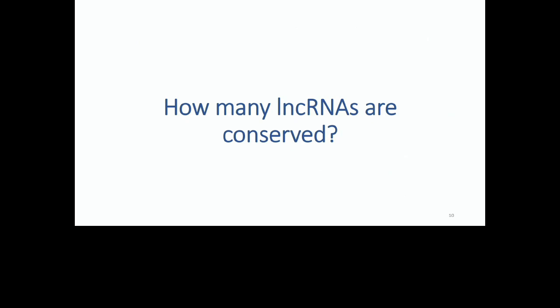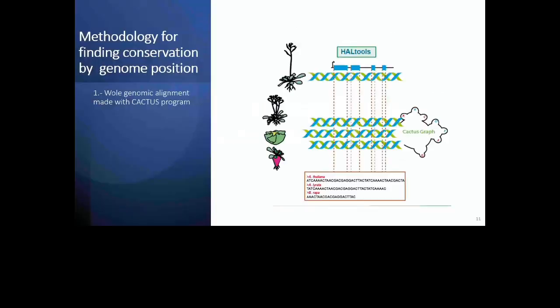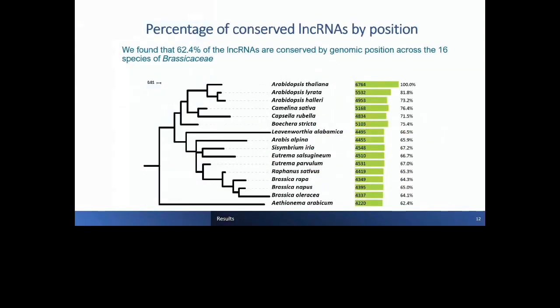The principal question is: how many long non-coding RNAs have structural conservation in plants? The first step is to find the orthologs of long non-coding RNAs in different plant species. For this, we made a genomic alignment — called a whole genome alignment — to find orthologs by position. As mentioned in the introduction, position is an important part of conservation of long non-coding RNAs.